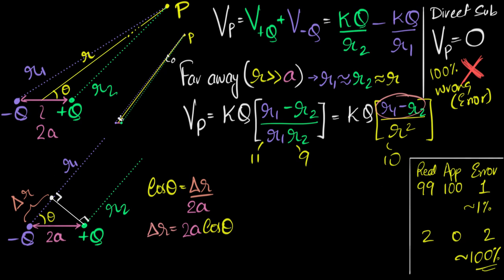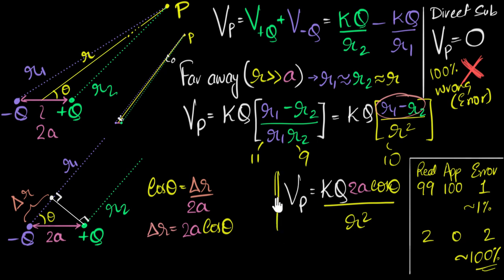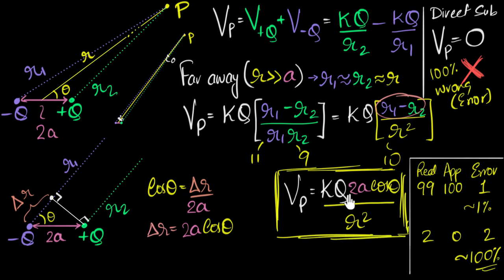Substituting delta R = 2a cos theta into the expression, the final result is VP = kQ · 2a cos theta / r². The potential due to a dipole depends not only on the charge but also on 2a — the separation — whose product with Q is the dipole moment, and also on the angle theta. The key trick was assuming r1 and r2 are parallel and using trigonometry in the far-field limit.